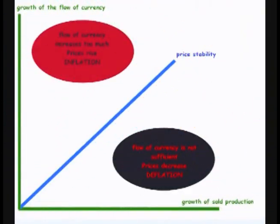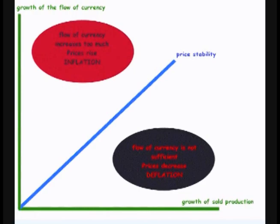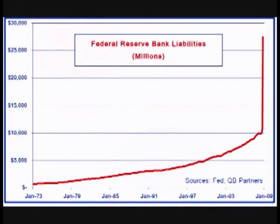In my last video, I showed how changing the reserve requirements raises or lowers the money supply. If the Fed raises reserve levels, it leaves less money for the banks to loan out. Since banks have less money to loan out, it reduces the amount of currency in circulation. If the Fed lowers reserve rates, it leaves more money left over for banks to loan out, which increases the amount of currency in circulation.